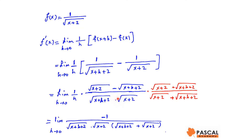To find the limit, we have to rationalize the numerator. Notice that although we have radicals in the denominator, when h approaches 0 they are going to become x plus 2 when multiplied — so we don't have any issue with the denominator. Therefore, we multiply by the conjugate of the numerator, which is √(x+2) plus √(x+h+2).